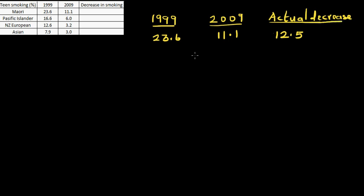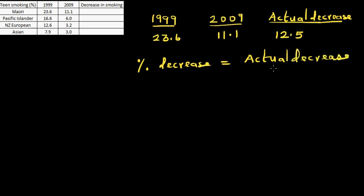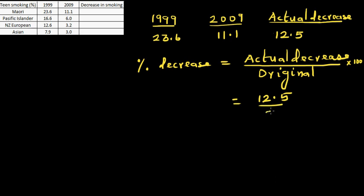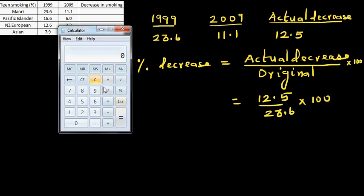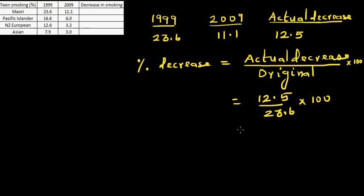But this is not the percentage decrease, this is the actual decrease. The formula for percentage decrease is: actual decrease divided by the original, times 100. So this is 12.5 divided by 23.6, times 100. Let me get the calculator out — that gives us 52.9, so it is approximately 53 percent decrease.